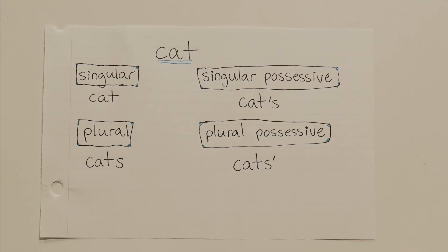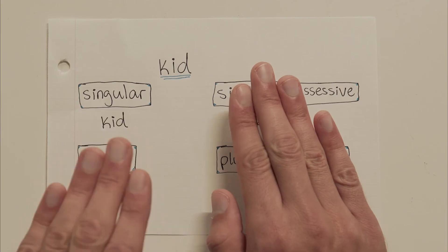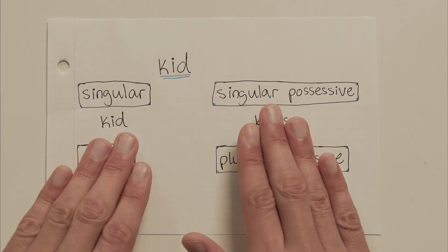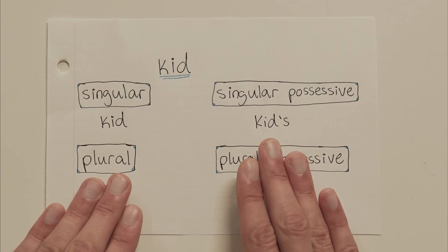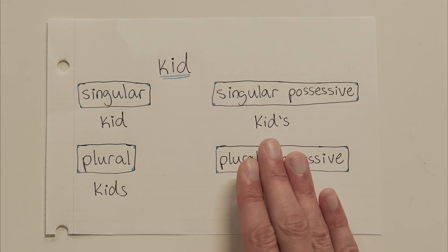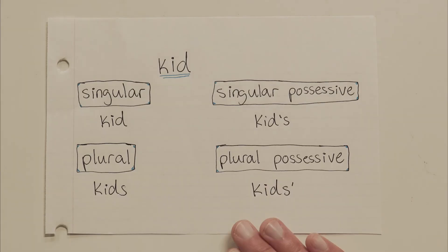Let's pick up the pace. The basic singular form of kid is kid. The singular possessive form — that one kid owns something — is k-i-d apostrophe s. The regular plural form, not possessive, is k-i-d-s. And finally, the plural possessive form — multiple kids owning some stuff together — give yourself a point if you said k-i-d-s apostrophe.